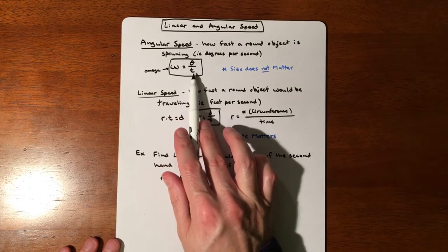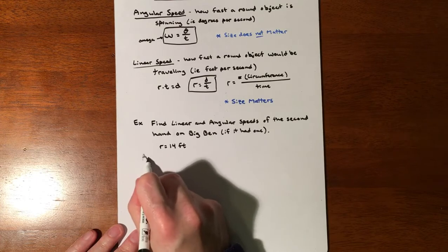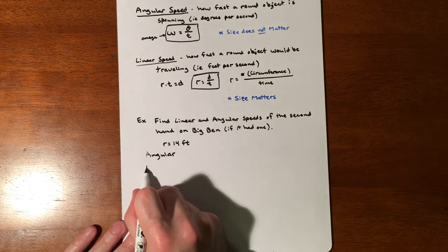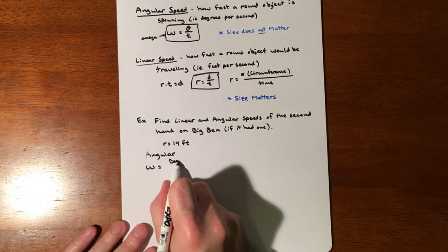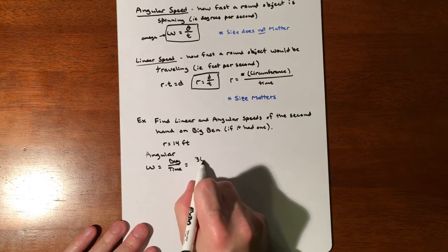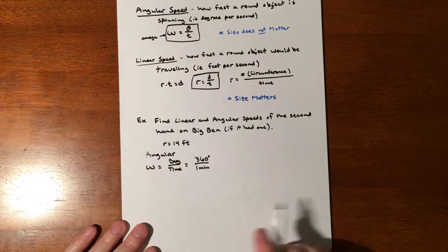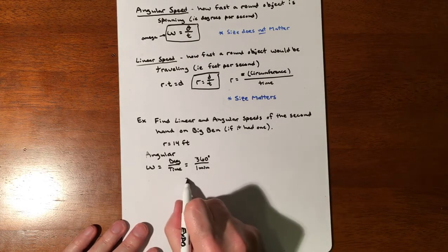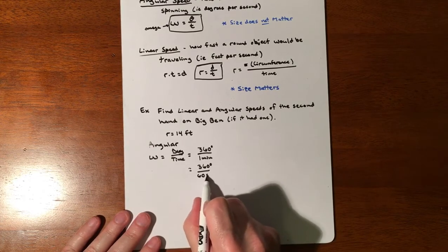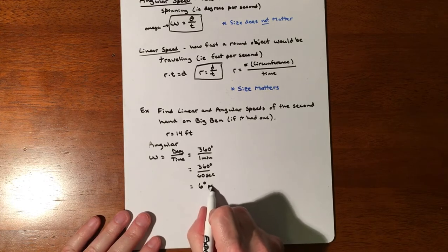Angular speed just needs to know how many degrees in a certain amount of time. For angular, we don't need the radius. Angular is just going to be our omega, degrees divided by time. For ours we're going to say it's 360 degrees in one minute, so 360 degrees per minute equals 360 degrees in 60 seconds, which makes six degrees per second.